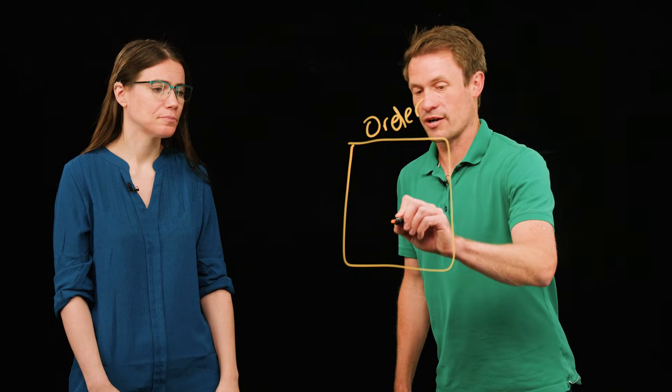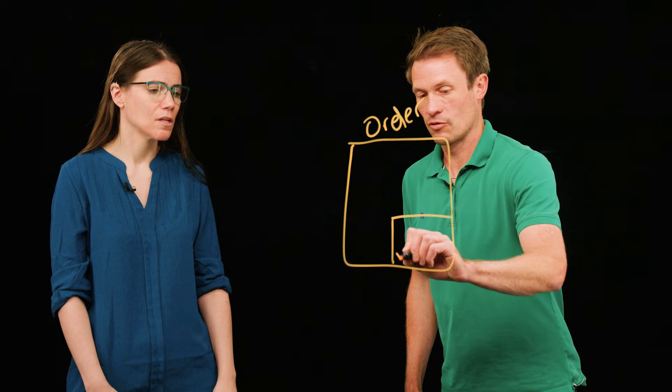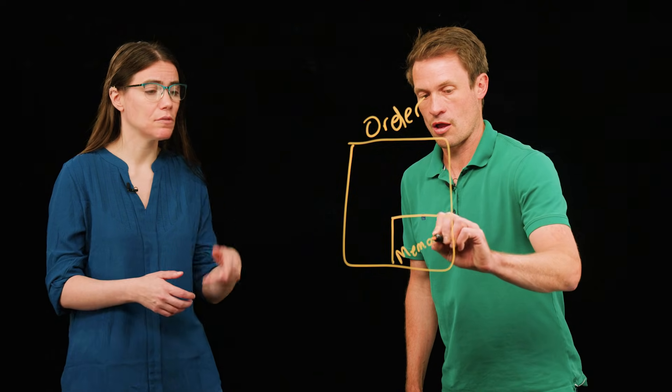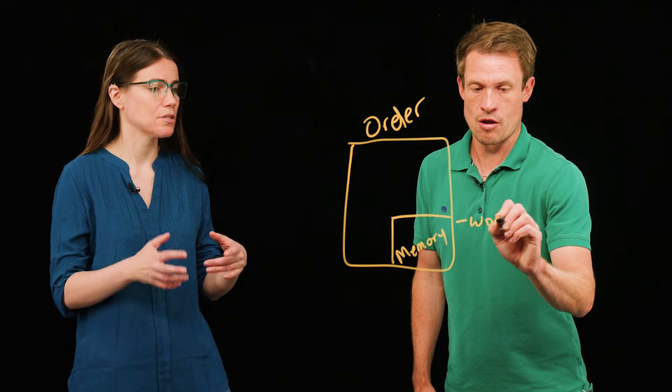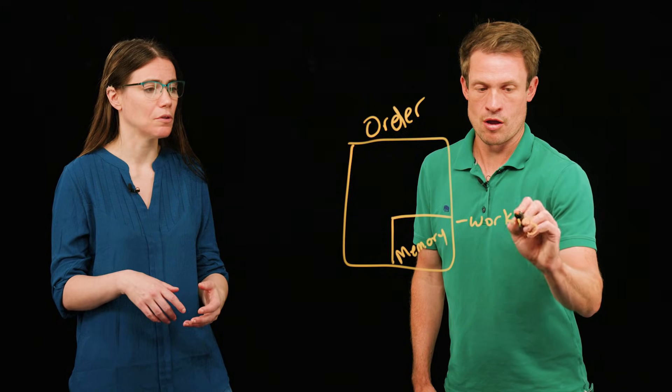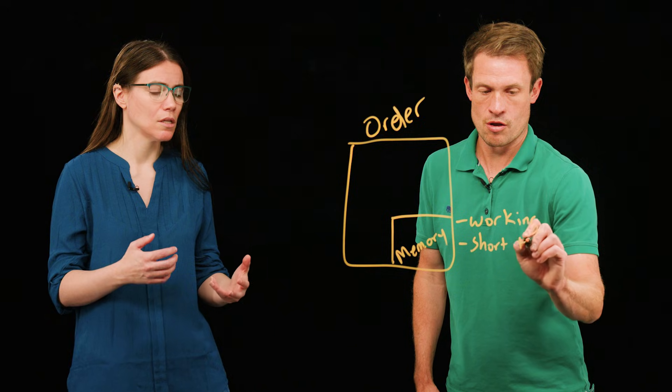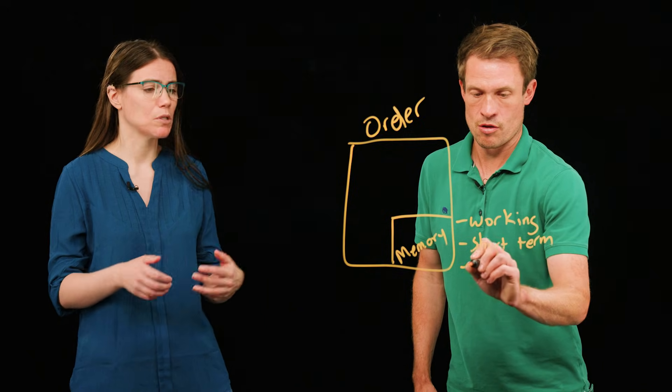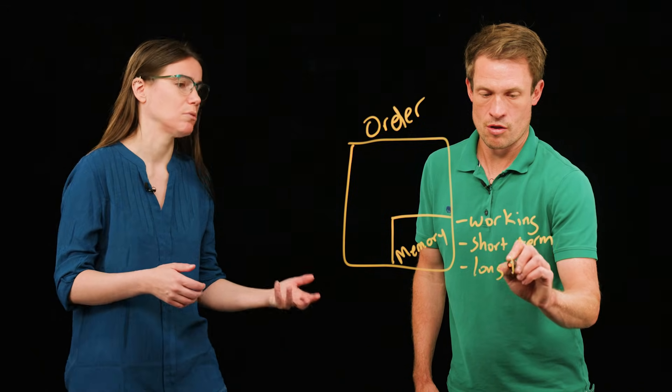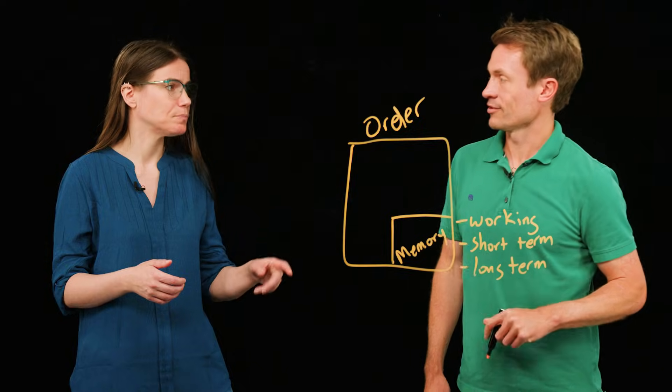And if you also remember, we talked about memory. Yeah. Which our agent has. And we talked about different kinds of memory. We had working memory for the current task or the current problem the agent was working with. We had short-term memory for some of the things that the agent had done recently. And then we had long-term memory, which we talked about as being used like across user sessions, right? Exactly. Okay.